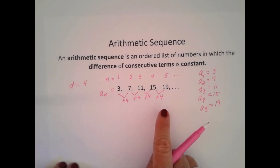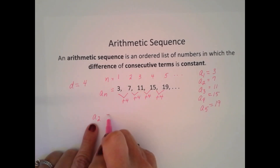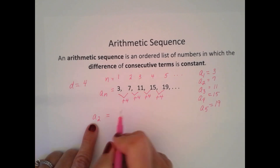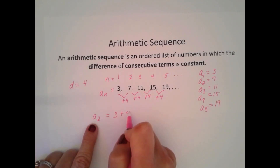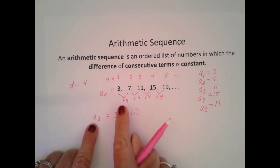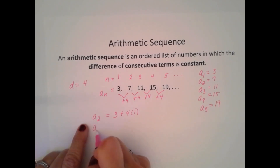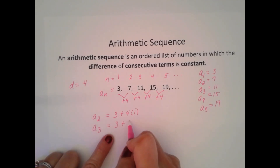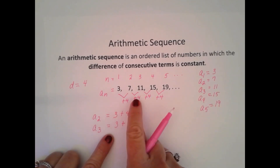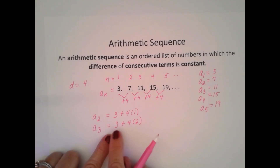Let's take a closer look at this sequence. A sub 2 is 7. How did I get that? Well, I started out with 3 and I added 4 one time. 3 plus 4 is 7. Now let's look at A sub 3. I started out with 3, and then I added 4 two times. So I started out with 3 and then I added 4 twice — so 4 times 2. That's 11.